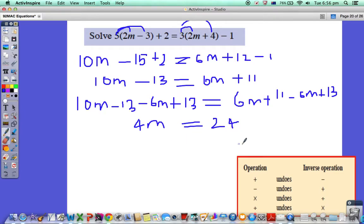Now we've got 4m equals 24. What is the opposite? Multiply by 4 means divide by 4. 4m divided by 4: 4 divided by 4 is 1, so m equals 24 divided by 4, which is 6.